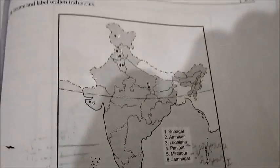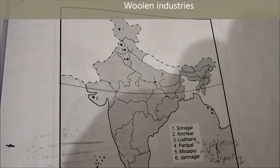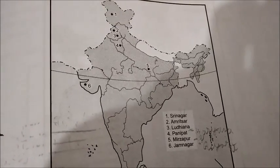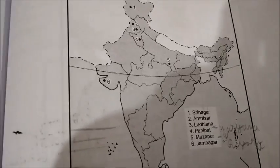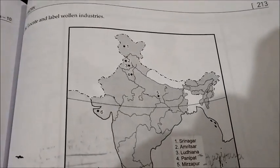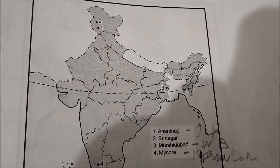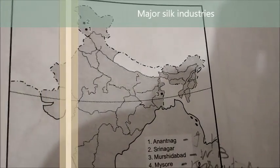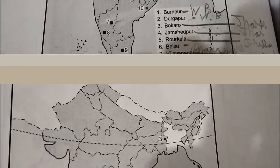For woolen industries, Srinagar is in Jammu and Kashmir. Amritsar and Ludhiana are in Punjab. Panipat is in Haryana. Mirzapur is in Uttar Pradesh. And Jamnagar is in Gujarat — six places to remember. For silk industries: Anantnag and Srinagar in J&K, Murshidabad in West Bengal, and Mysore in Karnataka.